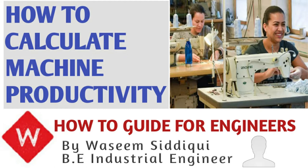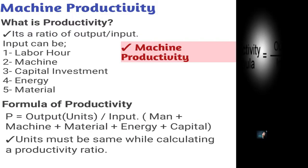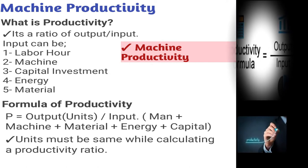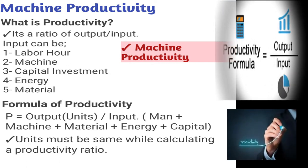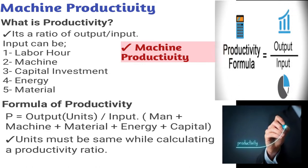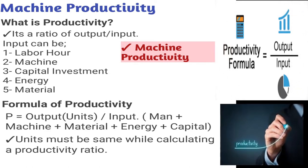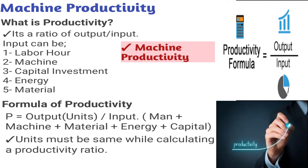Productivity is basically a ratio between output and input. Output means what you have to produce in the industry — it could be a car, it could be any product, it could be a garment that comes out of the job.